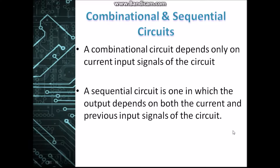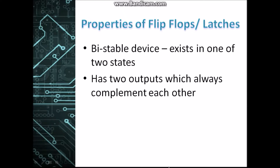Let's understand the difference between combinational circuits and sequential circuits. Combinational circuits are those whose outputs depend on the current input signals only, and these are used in adders, decoders, multiplexers, etc. Sequential circuits, on the other hand, depend on both the current as well as past input signals, and they provide a memory element that stores the previous output which can be fed into the circuit as present output. This is not possible using combinational circuits, so these are the types of circuits used for flip-flops.